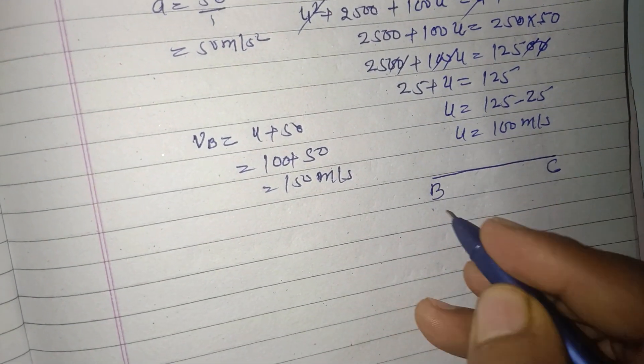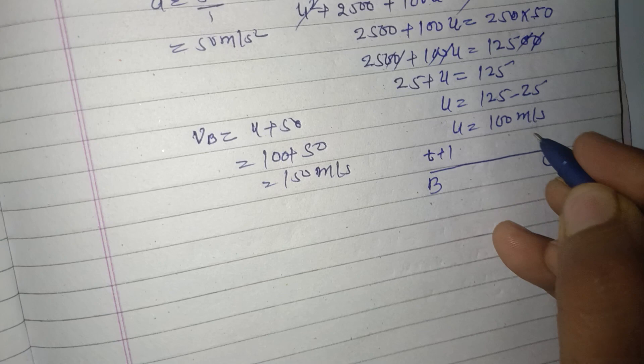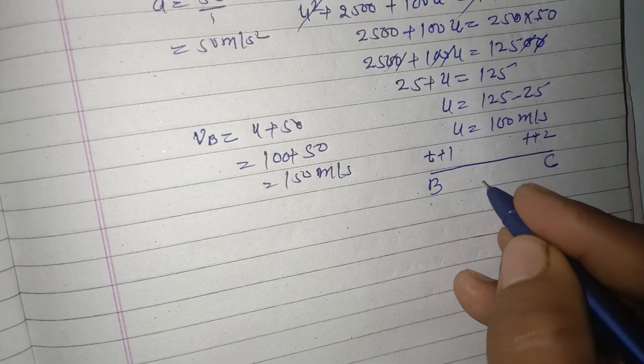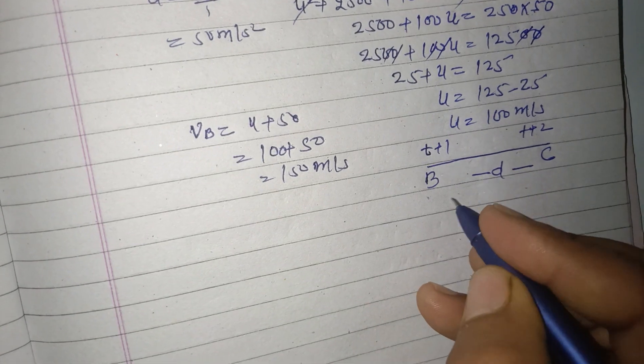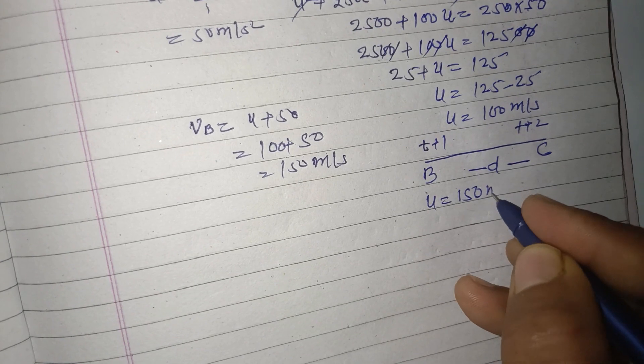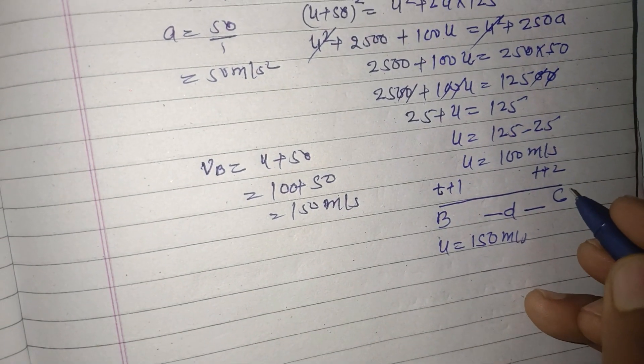Now we consider B to C. Here time is t plus 1 to t plus 2, displacement is required here, and velocity is 150 m/s.